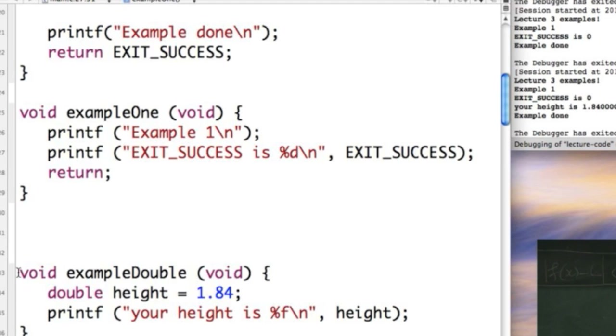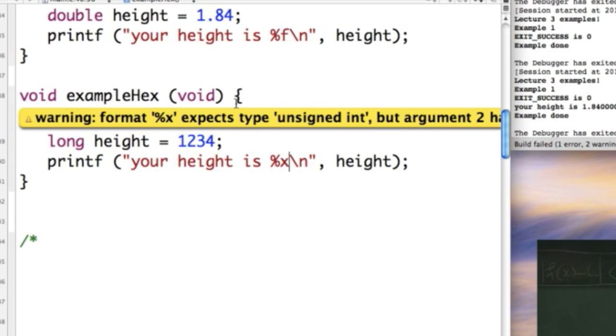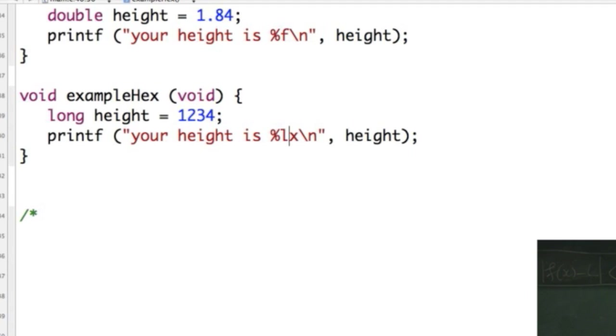What if we wanted to go example hex and let's just go long height equals 1, 2, 3, 4. Your height is, and you want to print it in hex, you go percent x. Let's have a look at that. Oh, have I not? Warning. Format x, percent sign, unsigned int. Argument has type long int. Oh, x. Oh, okay. I have to go L, x. Here we are.